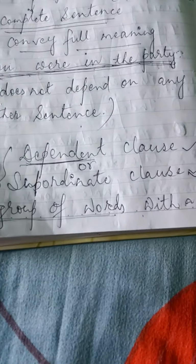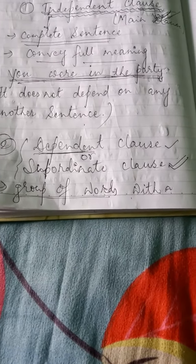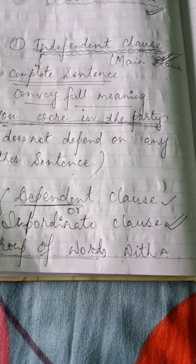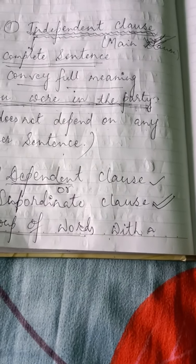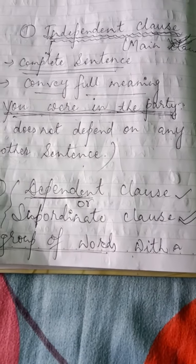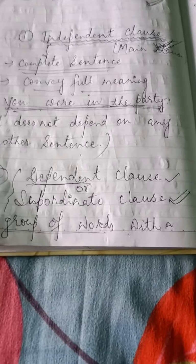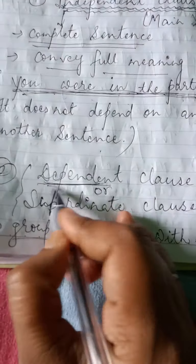A dependent clause depends on another sentence to make its meaning clear. It has a subject-verb combination but does not convey full meaning on its own, so we never use it as a sentence alone. That's why it is called a dependent clause — it depends on another clause.